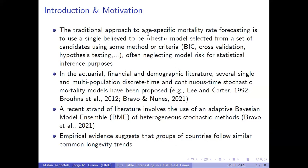In the actuarial, financial, and demographic literature, we have multiple single-population and multi-population discrete-time and continuous-time stochastic mortality models that have been proposed. We ourselves have contributed to this literature. A recent strand involves the use of model combination — Bayesian model ensemble of heterogeneous stochastic mortality models; for instance, the paper by Bravo and Hall is one example.